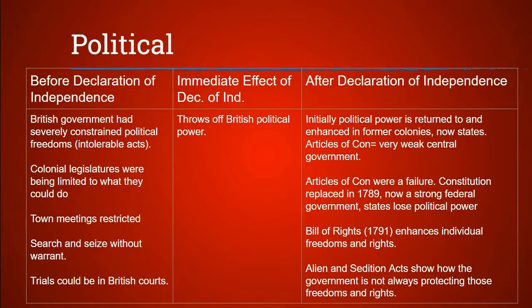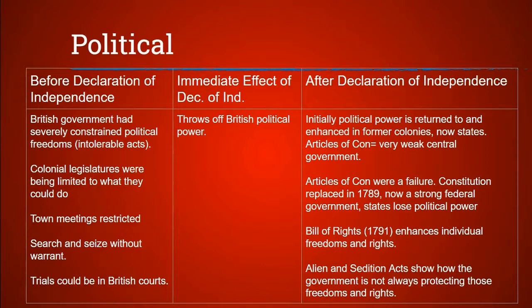The immediate effect of the Declaration of Independence cannot be politically understated — it overhauled the political system. Now Americans had to set up their own government, and partially because of their previous experience under what they viewed as British tyranny, colonial leaders set up a very weak central government called the Articles of Confederation. It was clear the state governments had most of the sovereignty, but this would also doom the Articles of Confederation to failure. A myriad of problems arose, and it was decided that they needed to be thrown out in favor of a stronger, centralized government.